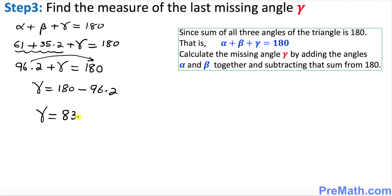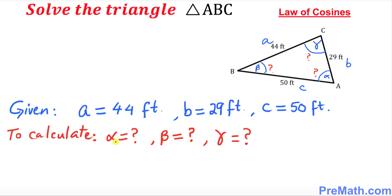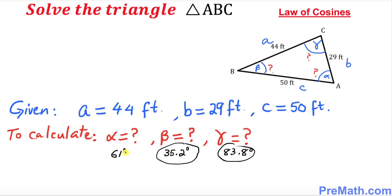Gamma turns out to be 83.8 degrees. So we have figured out all unknown values: alpha = 61 degrees, beta = 35.2 degrees, and gamma = 83.8 degrees. Thus we have solved triangle ABC. Thanks for watching, and please subscribe to my channel for more exciting videos.